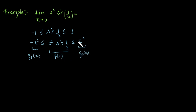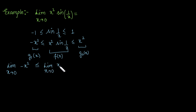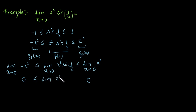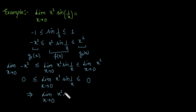Now we have found the two functions g1 = -x² and g2 = x² such that g1 ≤ f(x) ≤ g2. Applying the limit as x tends to 0: the limit of -x² is 0 and the limit of x² is also 0. This tells us that the limit of x² sin(1/x) lies between 0 and 0, so by the squeeze theorem, the limit as x tends to 0 of x² sin(1/x) equals 0.